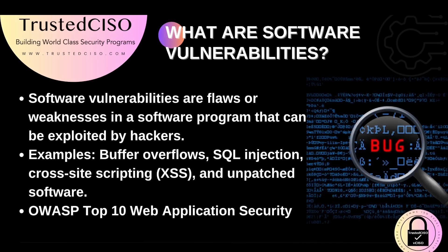Software vulnerabilities are flaws or weaknesses in a software program that can be exploited by hackers. Examples of common vulnerabilities include buffer overflows, SQL injection, cross-site scripting, also known as XSS, and unpatched software. The Open Web Application Security Project, known as OWASP, has a top 10 and is a critical resource for understanding and addressing these vulnerabilities. They also offer OWASP's ZAP, which can be downloaded for free to scan your code and website.